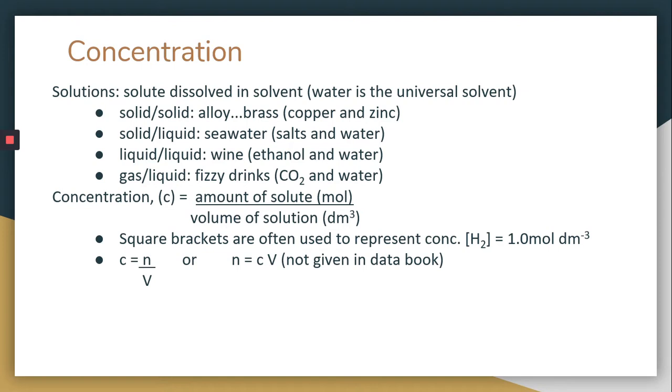Concentration, the symbol for concentration is a lowercase c, and it's equal to the amount of solute measured in moles divided by the volume of solution measured in decimeters cubed. Notice that the volume here is in decimeters cubed. We typically use square brackets to show concentration, so we have H2 in those square brackets show that this value of one is moles per decimeters cubed.